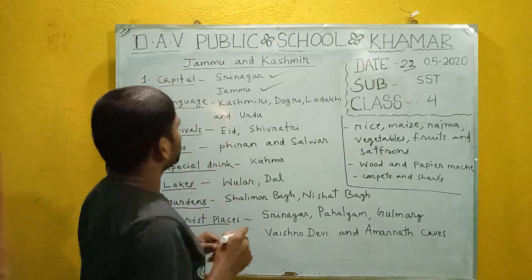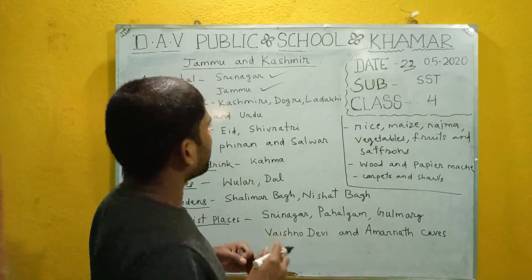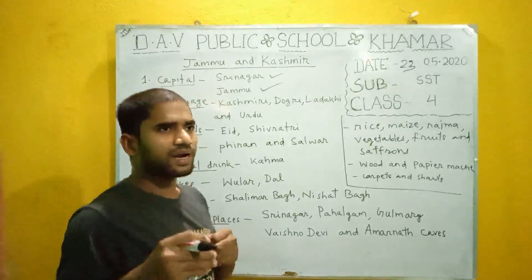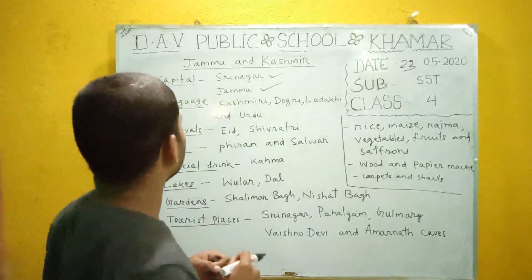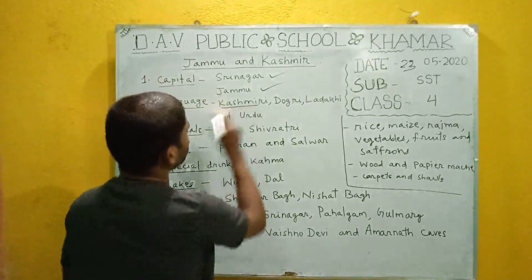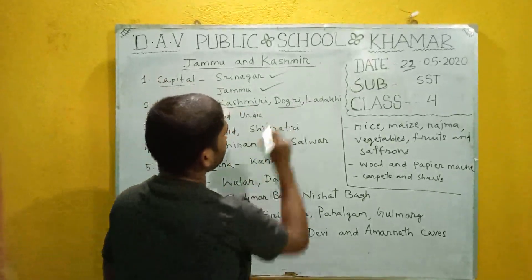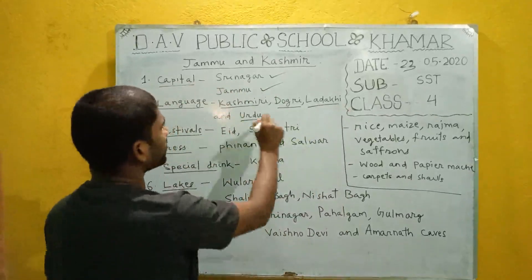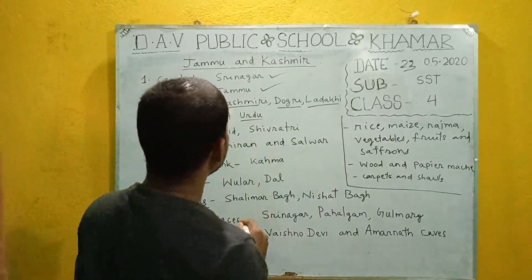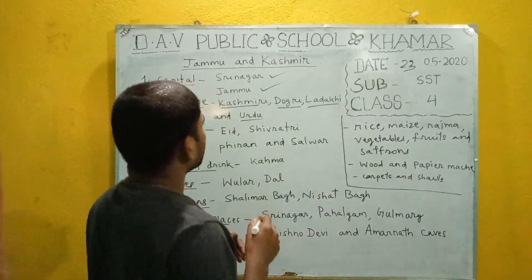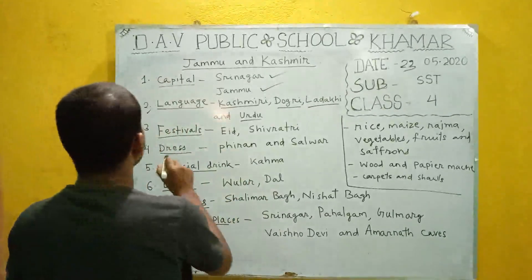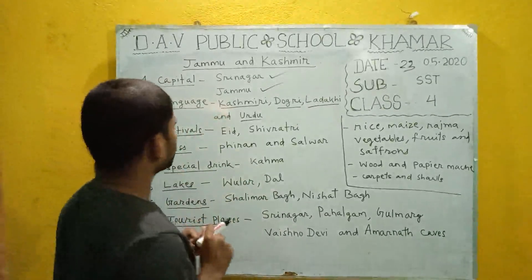Language: there are different languages spoken by the people of Jammu and Kashmir, like Kashmiri, Dogri, Ladakhi, and Urdu. These are examples of the different languages spoken in Jammu and Kashmir.